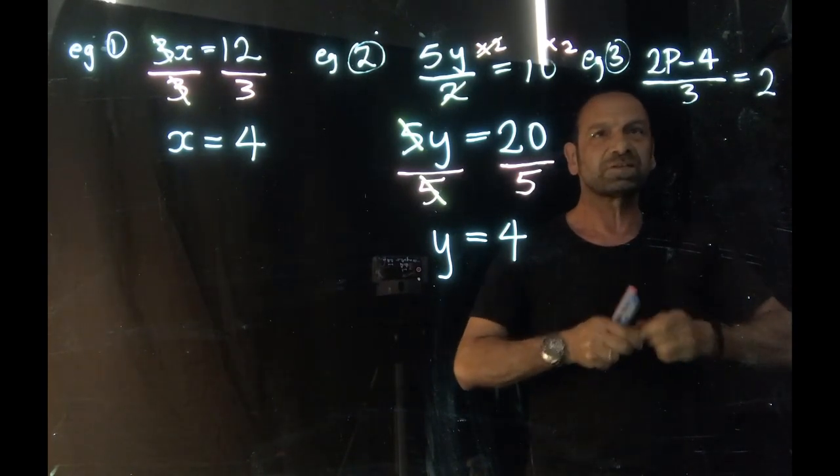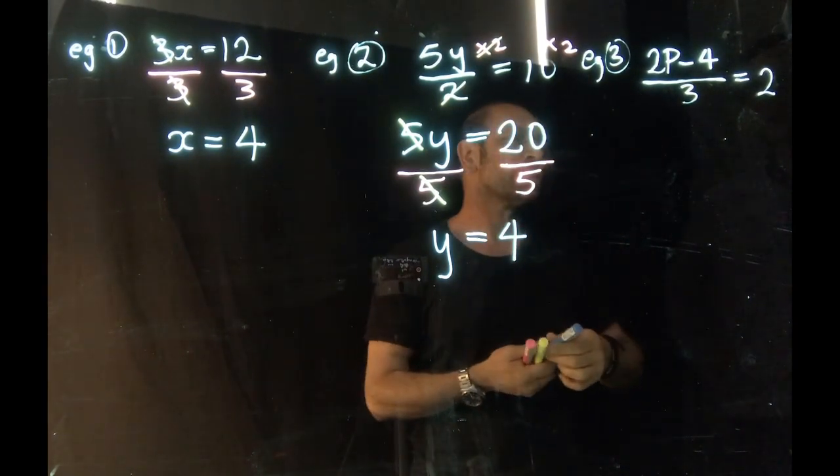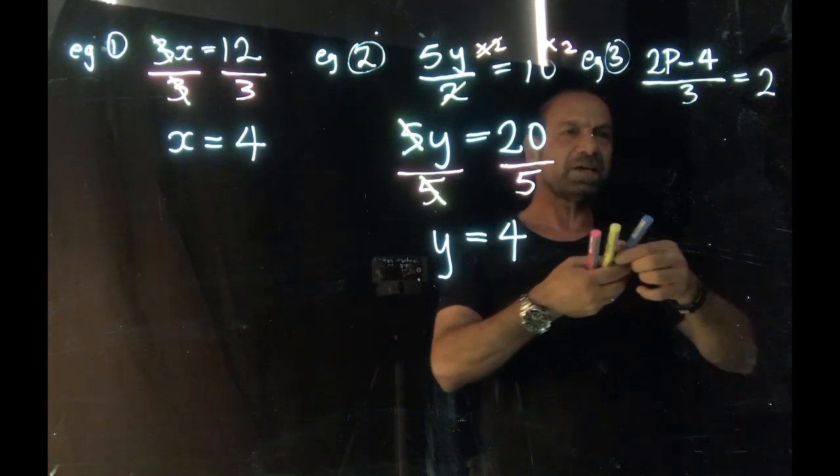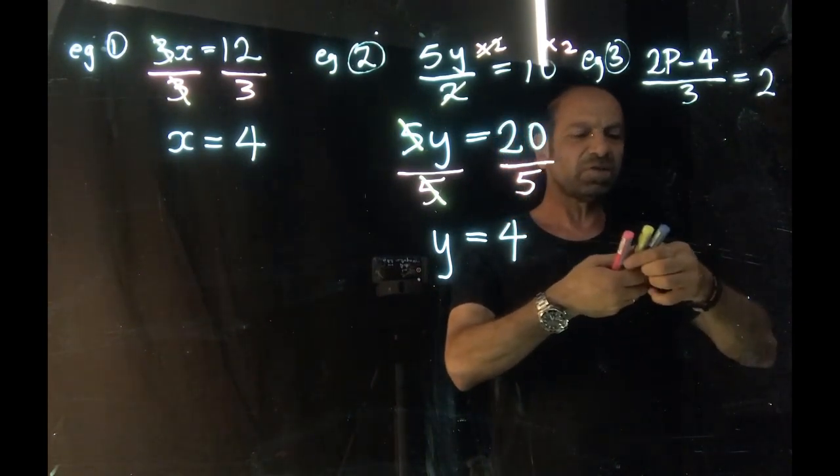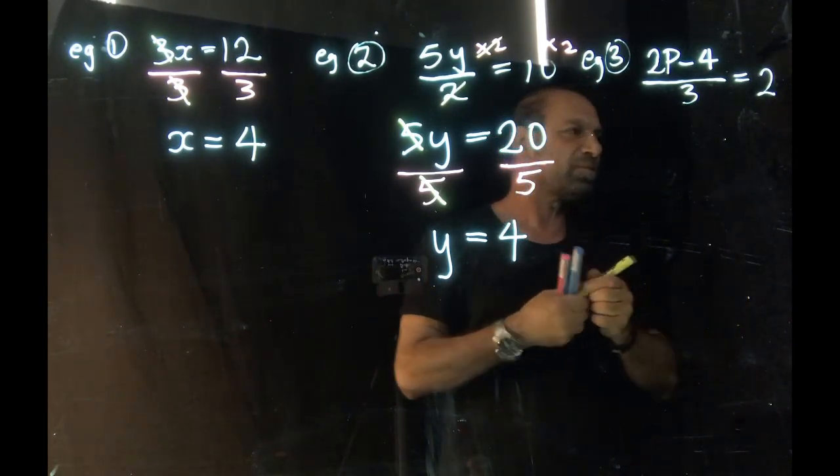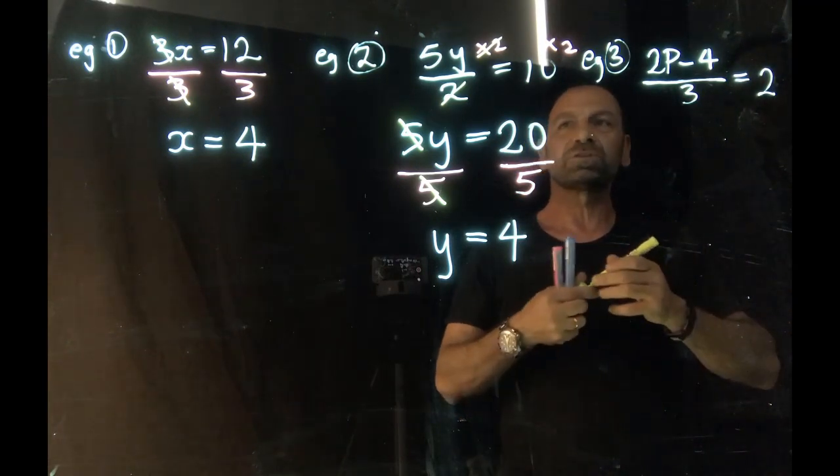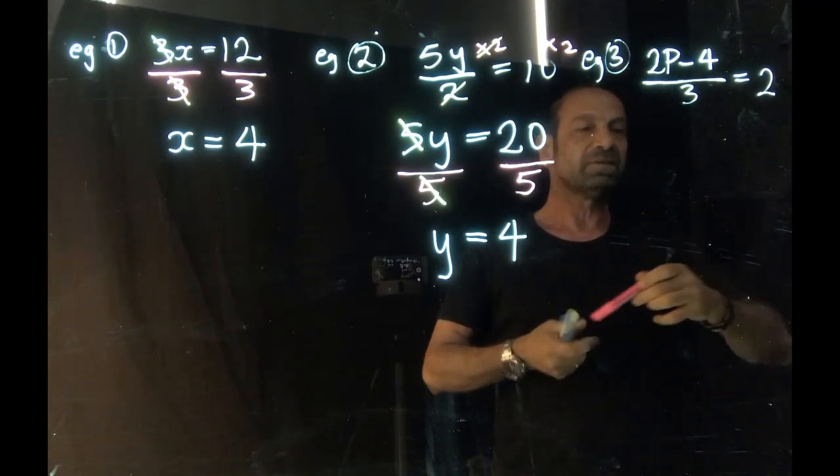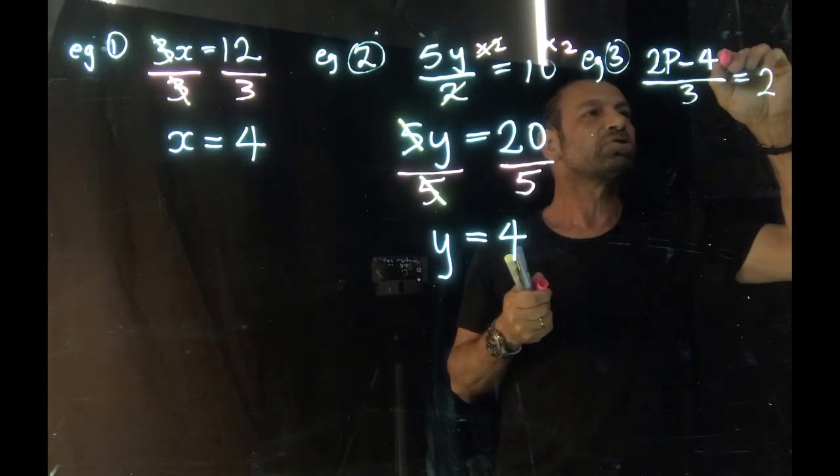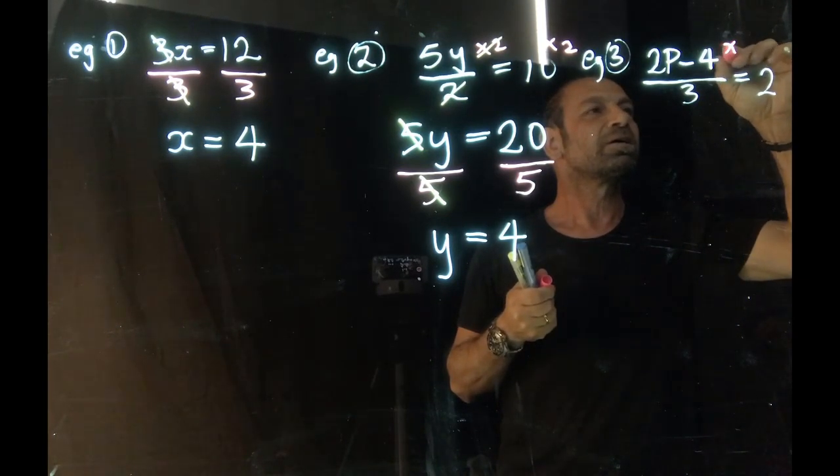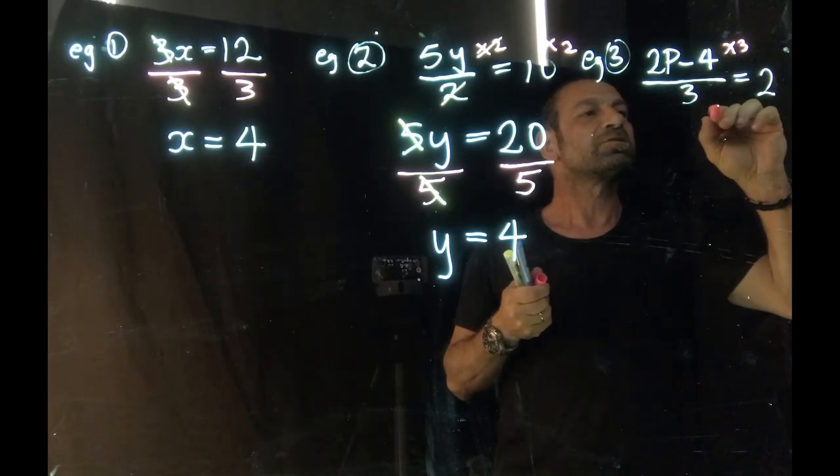Off we go to the third and final example, which will have one extra step. Okay, so in this particular case, we need to begin with a division there of 3. So therefore, we're going to do the reverse operation. And that means we're going to be multiplying by 3, both sides.